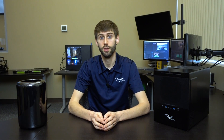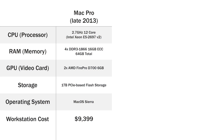Let's go over the specs of the Mac Pro and the PC workstations we're going to be looking at in this video. Starting with the Mac Pro, we're looking at the top-of-the-line system. It has the 12-core CPU, 64 gigs of DDR3 ECC memory, dual FirePro D700 video cards, along with a 1 terabyte PCIe-based flash storage. This system retails for $9,399.